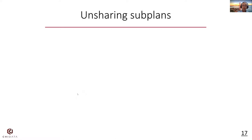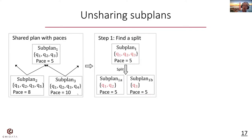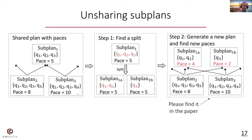Now we can decide the non-uniform paces. The next optimization is to choose which subplans to share or not. Given a shared subplan, we consider splitting the queries sharing the subplan into multiple groups. For example, subplan 1 is shared by 3 queries. We first find the split that decomposes the subplan into 2 groups and then generate the new plan. In this talk, I will focus on the first step — finding a split to reduce the total work. Please find the details of the second step in the paper.